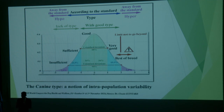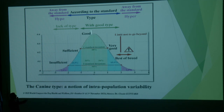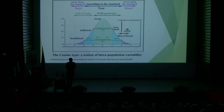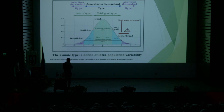And if we consider now the third breed — the Pug — in the Pug more or less the mean value is around 0.1. The hypertypical animals are under 0.1 for the craniofacial ratio, and above 0.2 we are in lack of type. So you can see: 0.3 for Dogue de Bordeaux, 0.2 for the French Bulldog, and 0.1 for the Pug. It means that this limit is different between the different breeds.